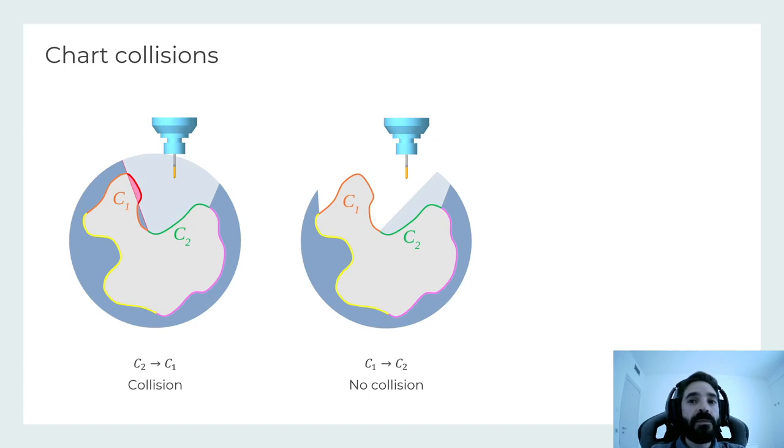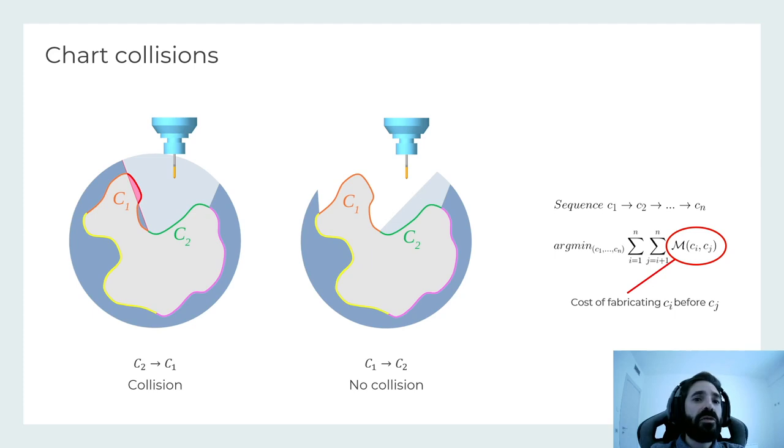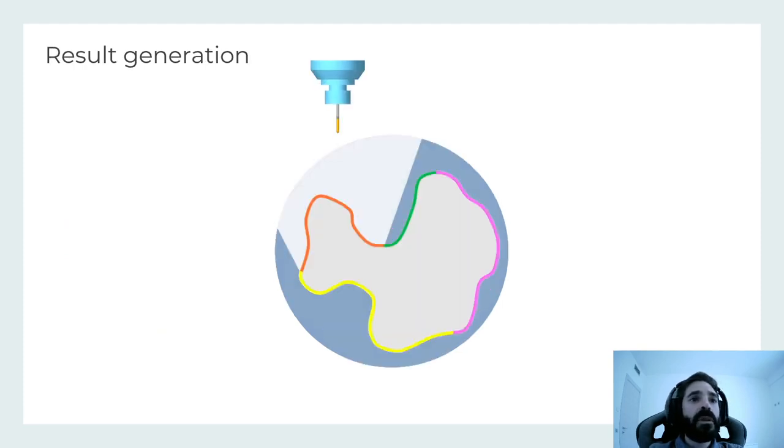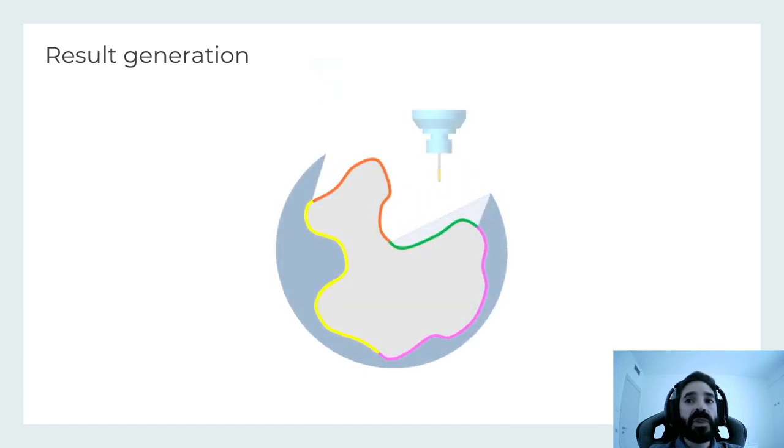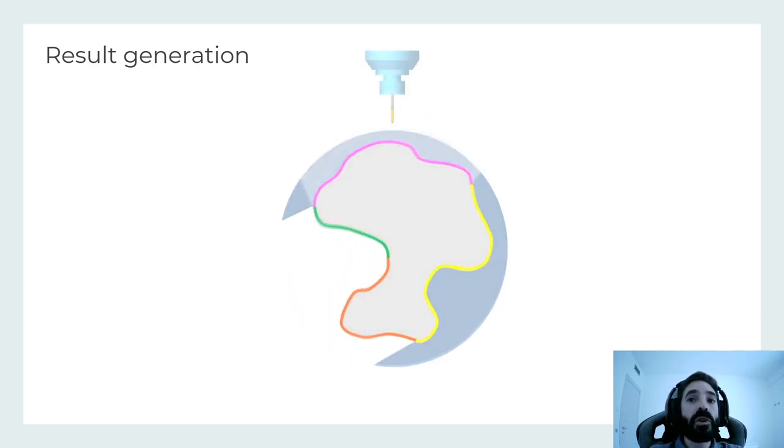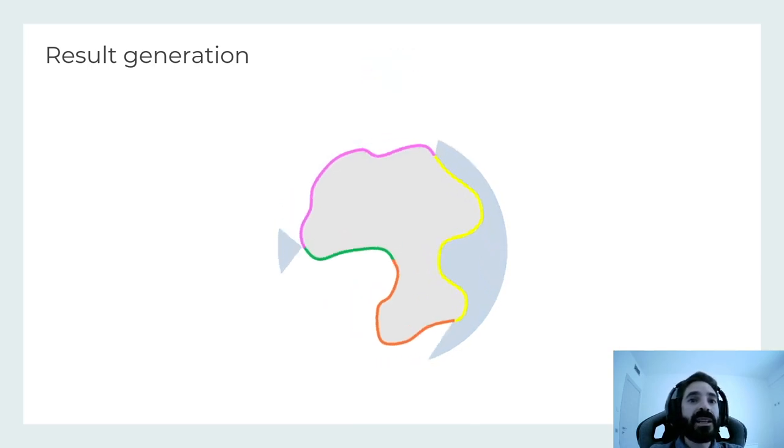We solve an optimization problem with a greedy approach that minimizes the area that collides among charts. Once we have found the fabrication sequence, we can generate the resulting models and stock for every fabrication direction. Note that we use each result as stock for the next step in the sequence. The meshes are generated using exact boolean operations.